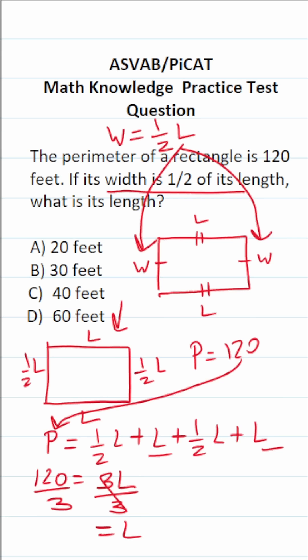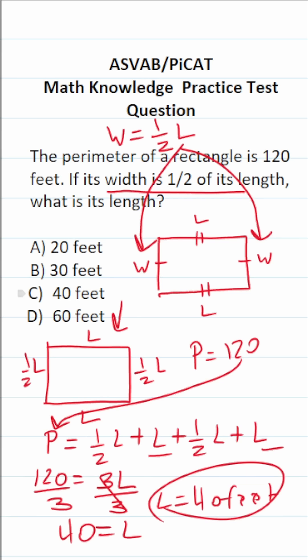This gives us L equals 120 divided by three. Since 12 divided by three is four, 120 divided by three is 40. So the length of our rectangle is 40 feet. The answer is C.